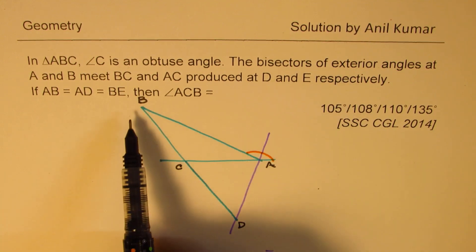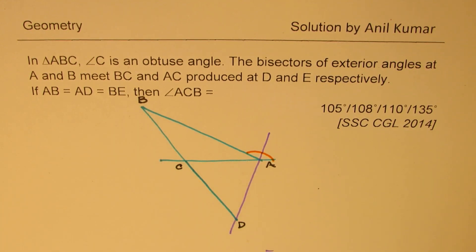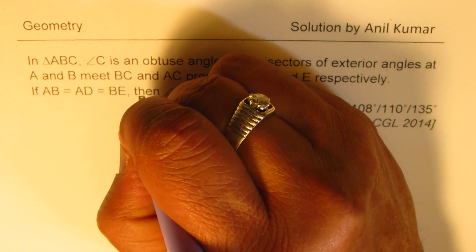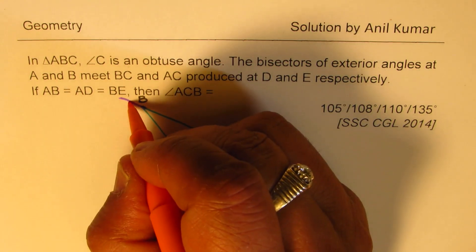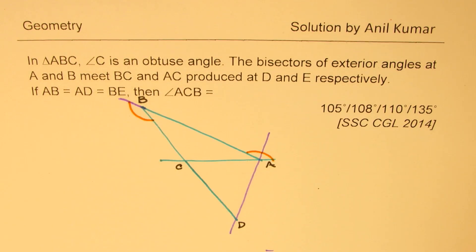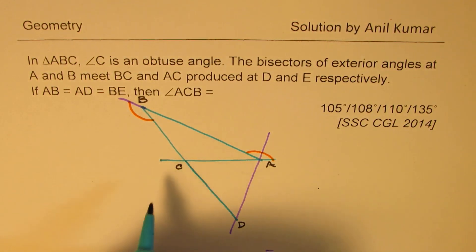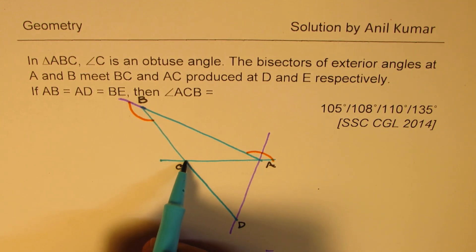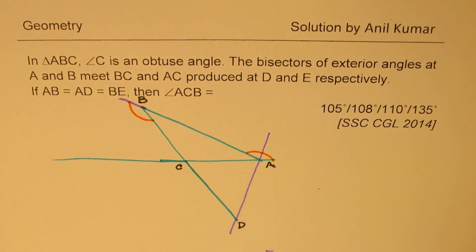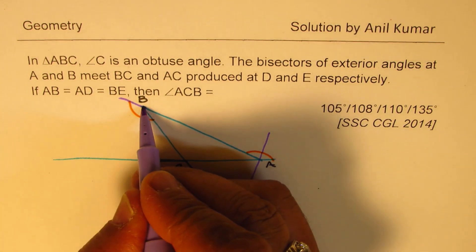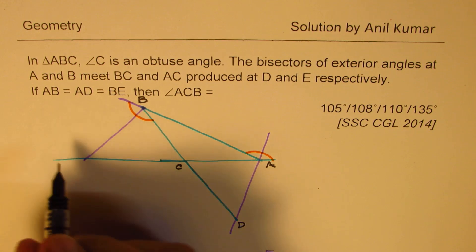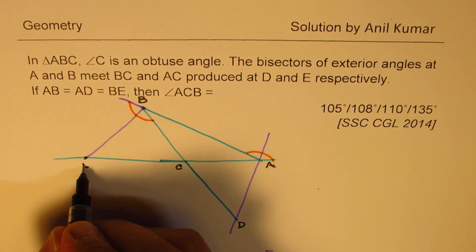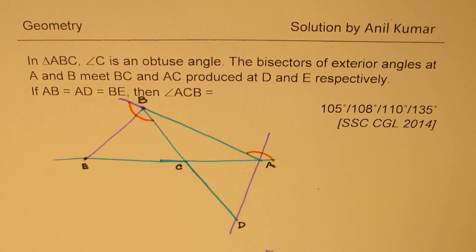And now we have to bisect this angle, exterior angle. So this exterior angle, let me extend this. Now we have an exterior angle here. Now the bisector at this exterior angle will be meeting that line. So let's bisect. And this point is E for us. Is that clear to you? This point is E for us.